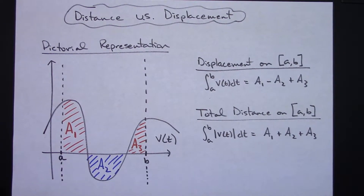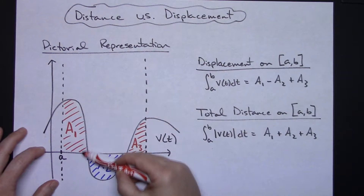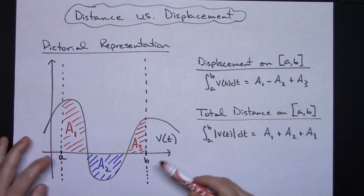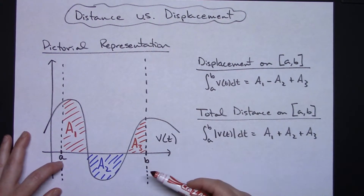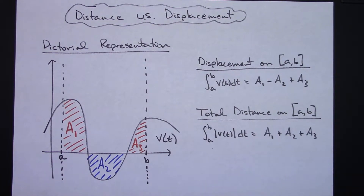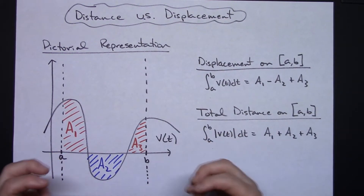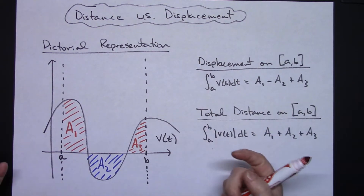Let's suppose that we're dealing with the velocity function. Here is a velocity function v of t, and I'm considering this on the interval from a to b. It's going to involve integration, and as you recall, when you integrate, you are finding the area under the curve because integration accumulates things.